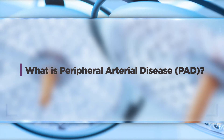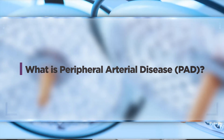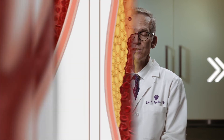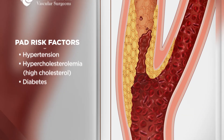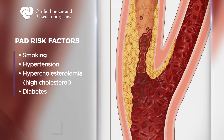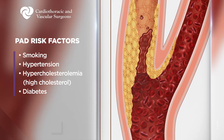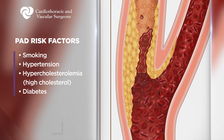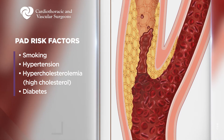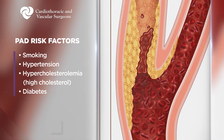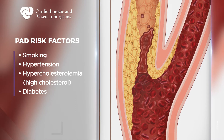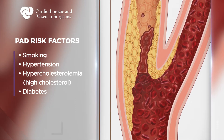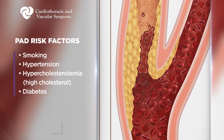PAD, or peripheral arterial disease, is a chronic buildup of plaque in the blood vessels supplying the lower extremities. The risk factors include smoking, hypertension, hypercholesterolemia, and diabetes. It's often associated with vascular diseases in other beds, such as the coronary arteries.